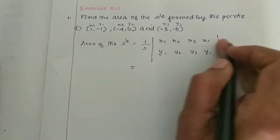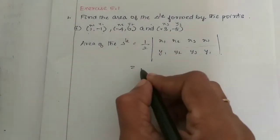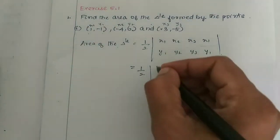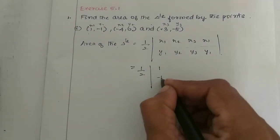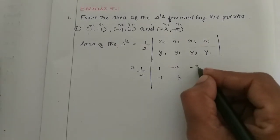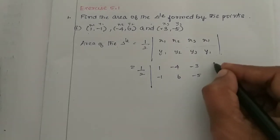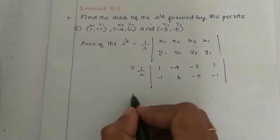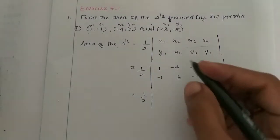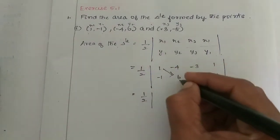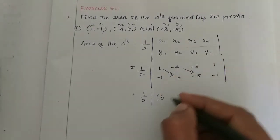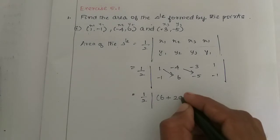This is the second step. This is the third step. Half into x2. You can see here: 1 minus 1. Then minus 4, 6. Minus 3, minus 5. That is 1 minus 1. Which is equal to half into — you multiply: 1 into 6 is 6.